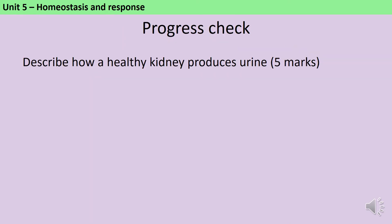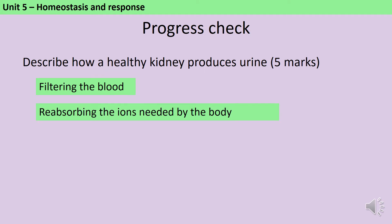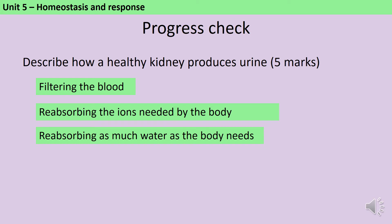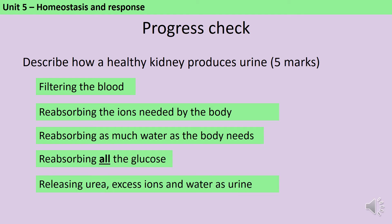Pause the video and make sure you can write down five bullet points describing how a healthy kidney produces urine. The first step is that the kidney filters the blood under high pressure. Then we have selective reabsorption of whatever ions the body needs, however much water the body needs, and all of the glucose. Finally, the urea, the excess ions, and the water are excreted in the form of urine.